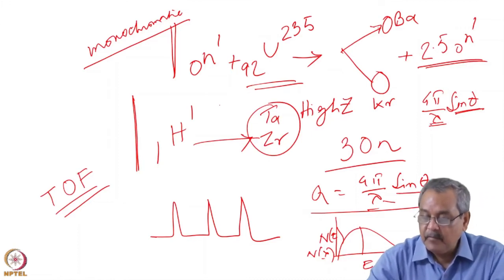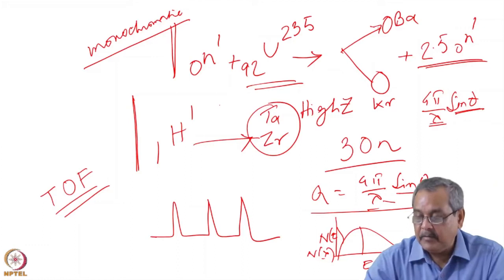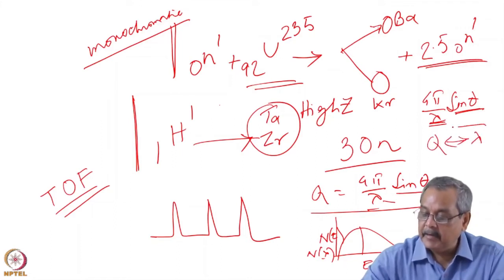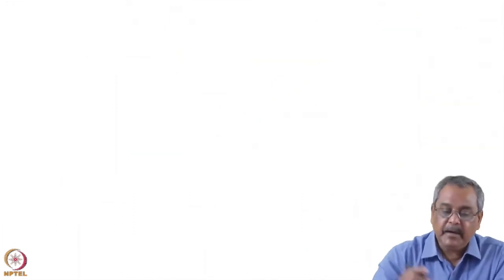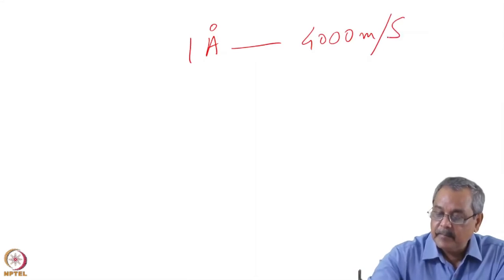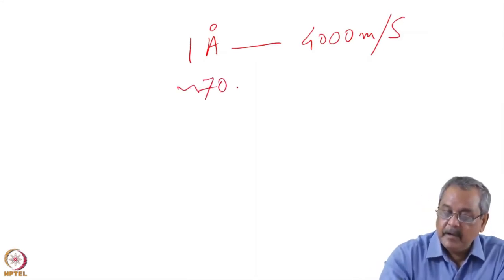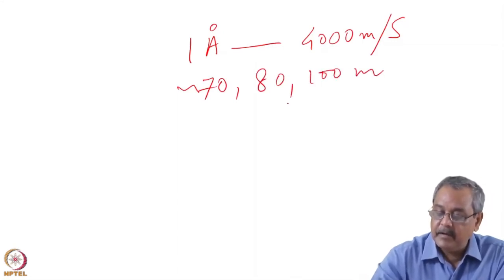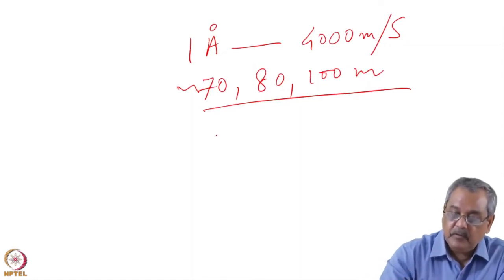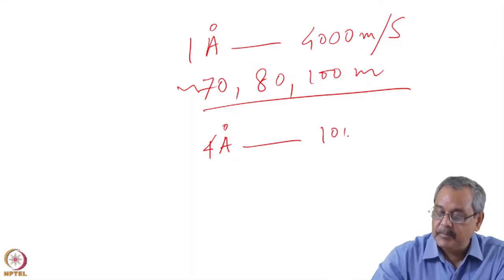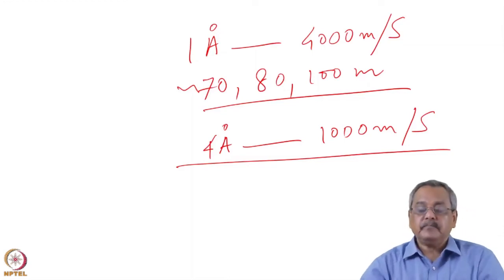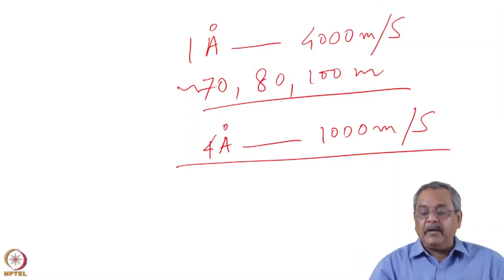I can do for a single setting without moving my detector or with one setting of the detector, I can get a range of lambda or range of q because now q and lambda they are tagged in case of a spallation neutron source. Typically I can tell you a one angstrom neutron moves typically around 4000 meters per second. So really speaking a distance of 70, 80, 100 meters if I consider from the source to the detector, we can easily tag the time starting from the source and it is linear. So that means 4 angstrom neutron if I consider it will go around 1000 meters per second. So in some of the problems that I have given you can use these things and you can calculate out various parameters.